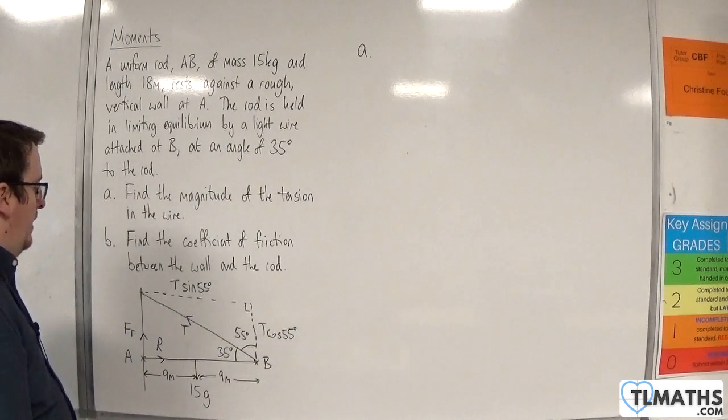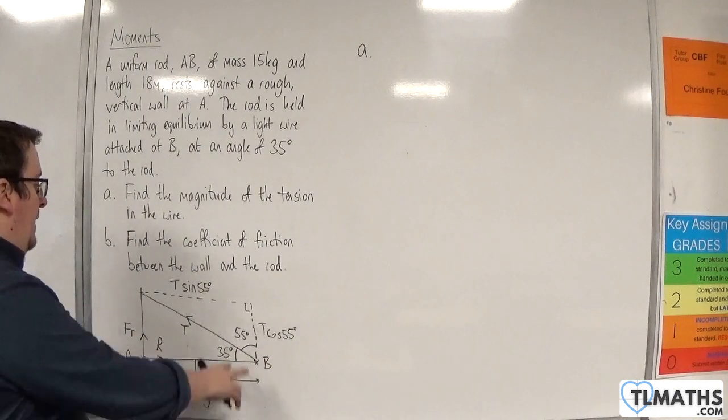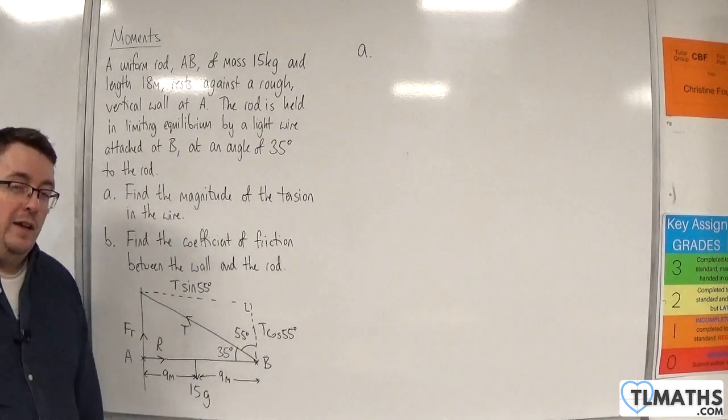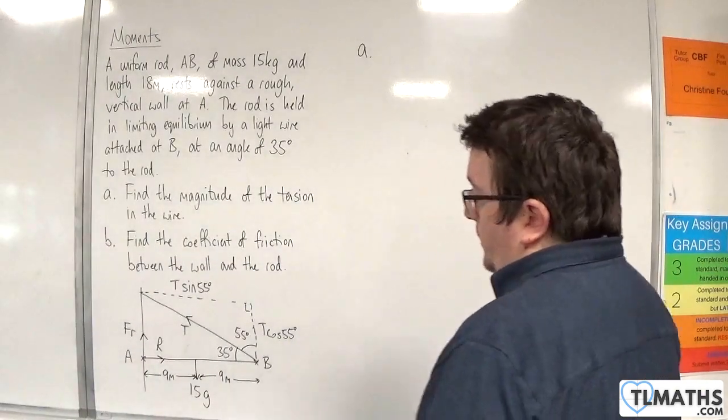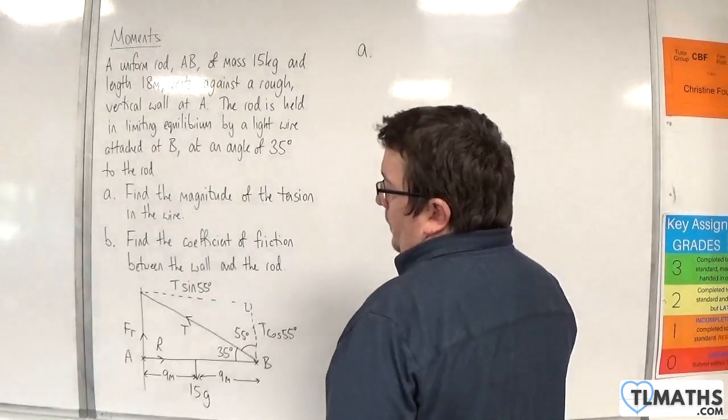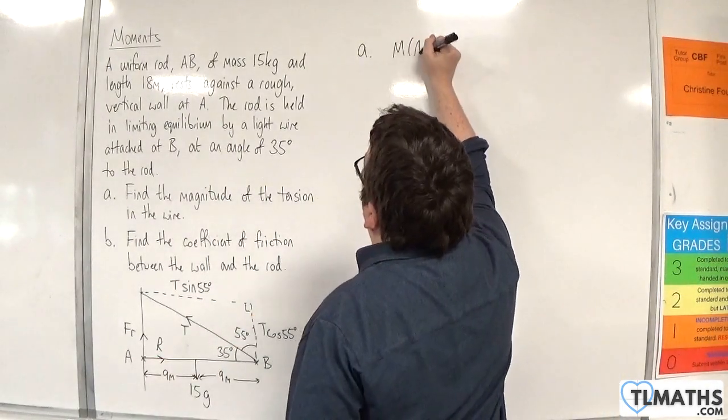If I resolve horizontally, I've got the normal reaction force and the T sine 55. So two unknowns again. So it doesn't make sense to resolve just yet. I'll take moments. It makes sense to take moments about point A, because I've got two unknowns at that point.